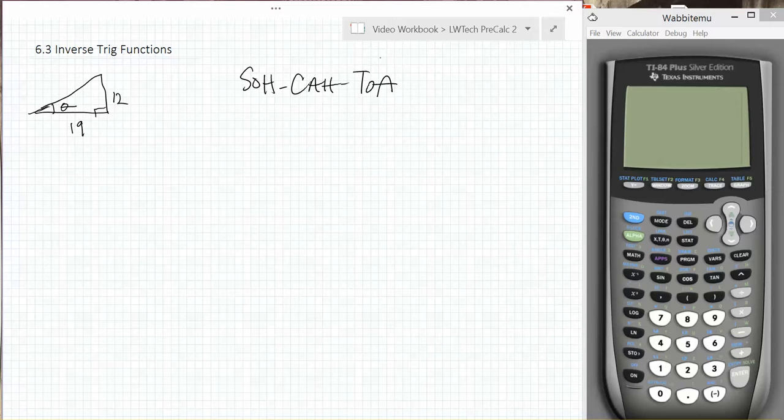In this case, our unknown angle is here. I don't know the hypotenuse, but I do know that the side opposite from my angle theta is 12, and the side adjacent or next to my angle theta is 19. So I know an opposite side and an adjacent side.